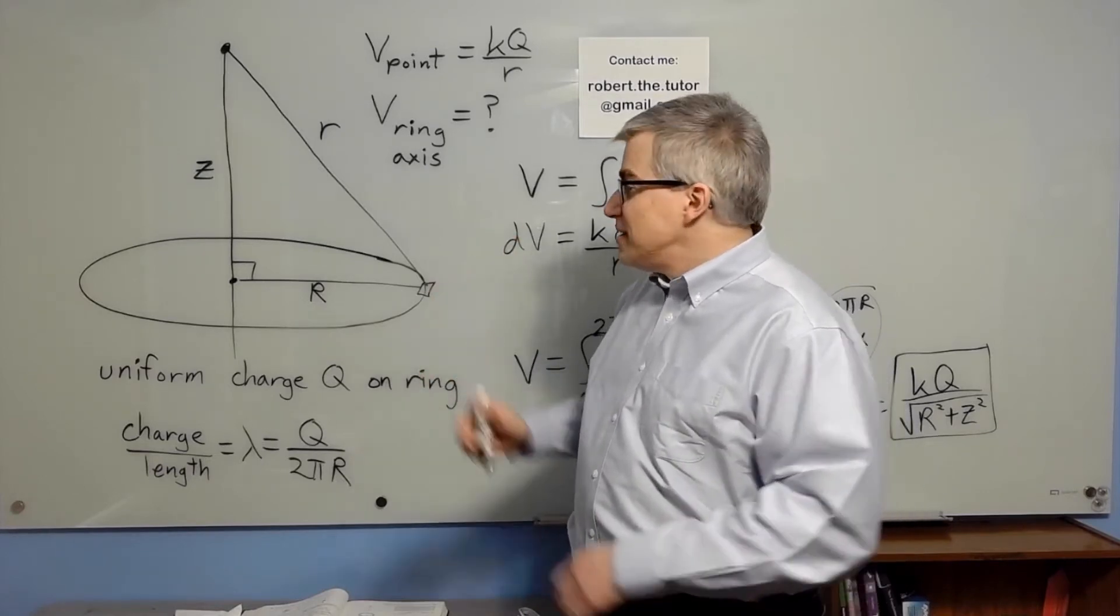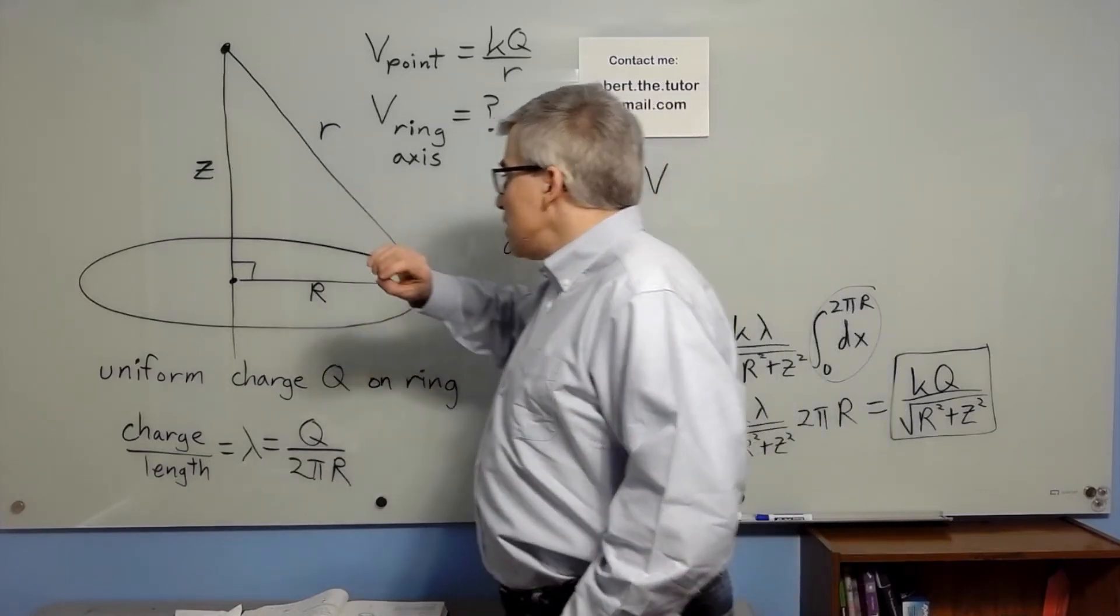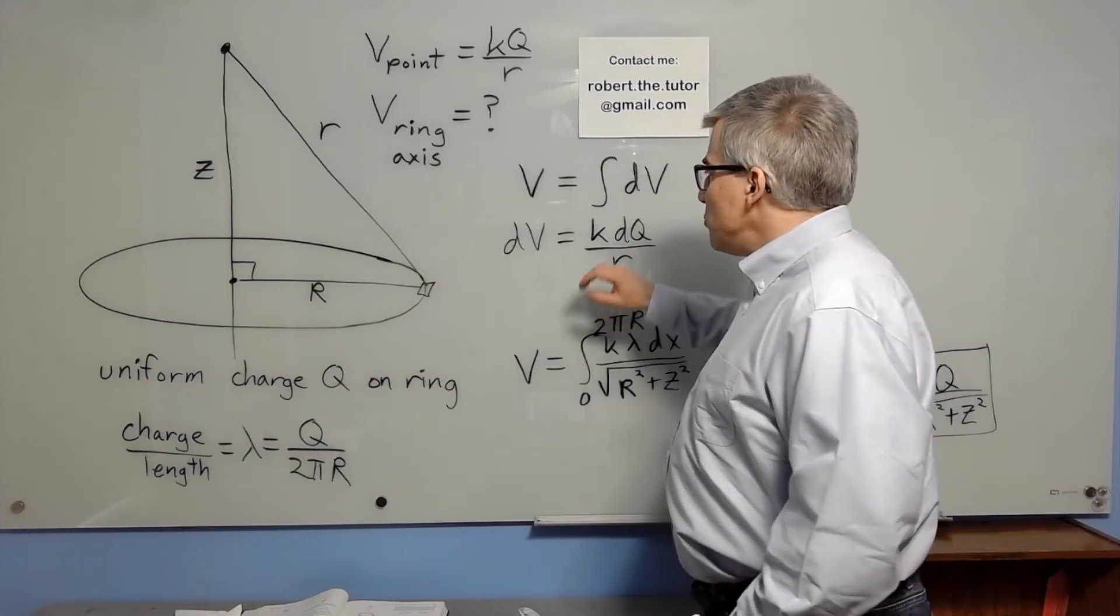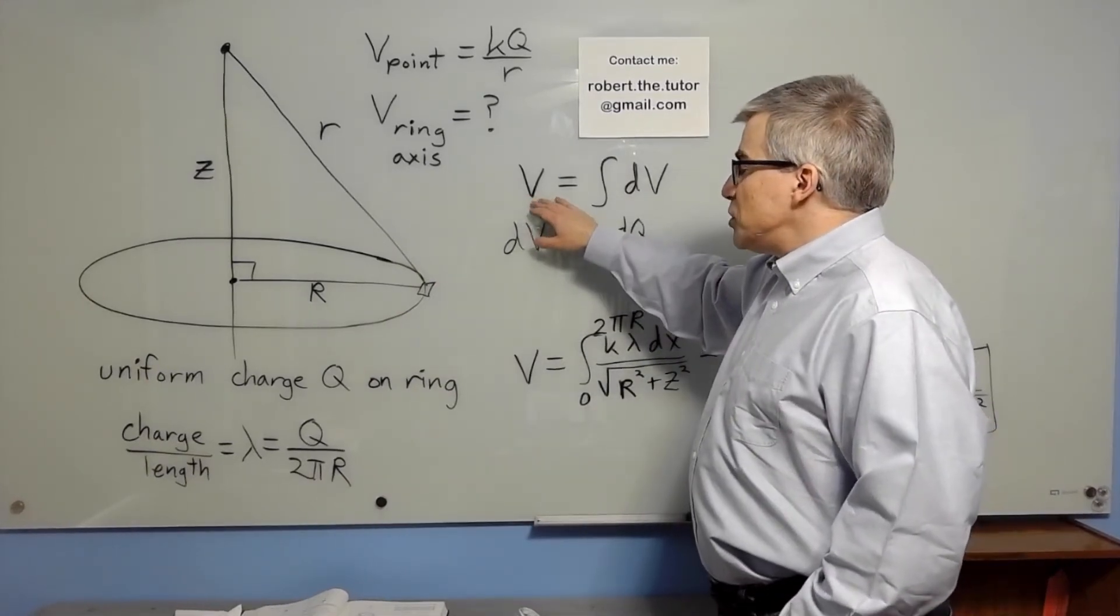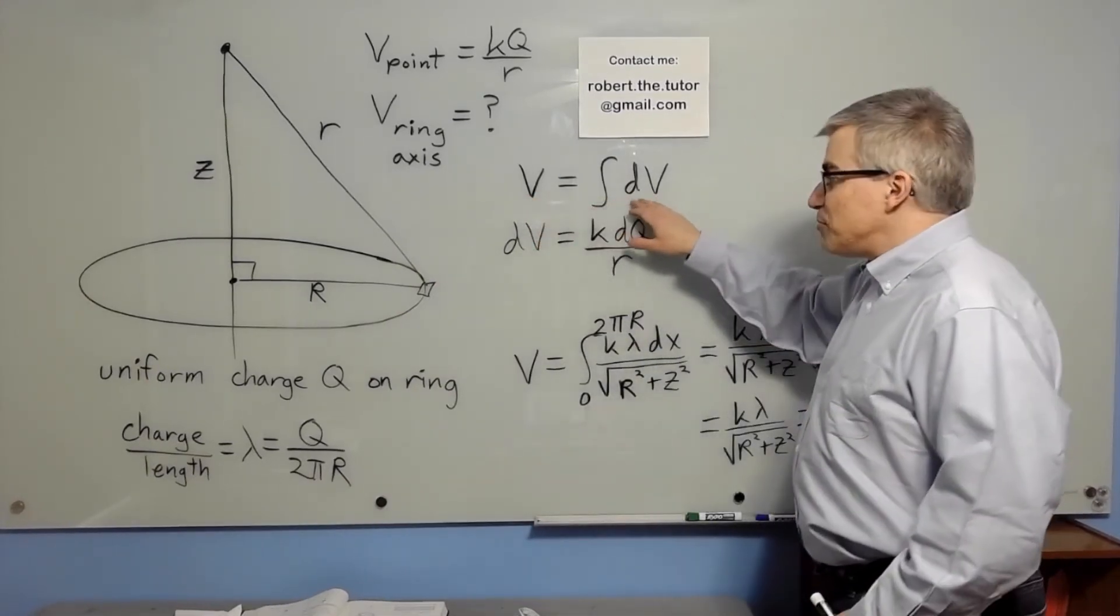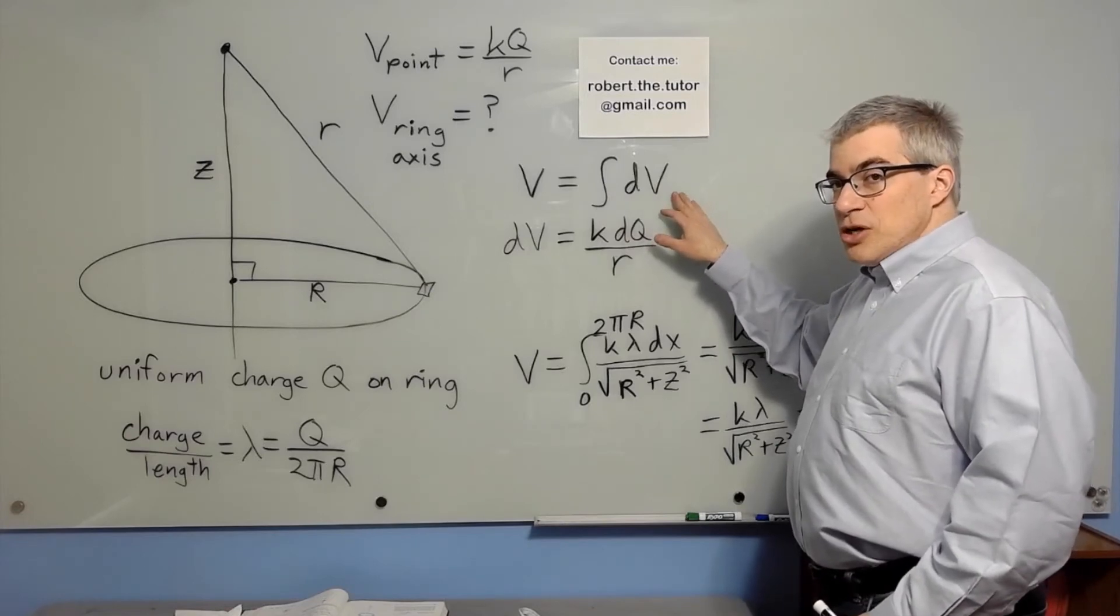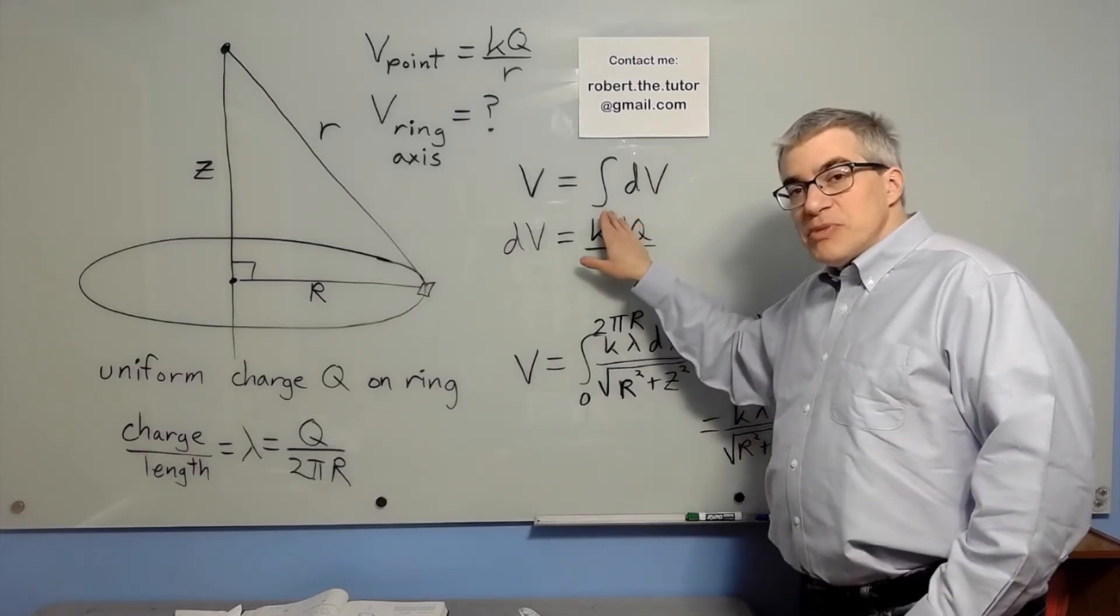Because of that, R being a constant, when we try to find the voltage of the ring, we're going to add up all the little bits of voltage, and because it's continuous, adding them up means doing an integral.